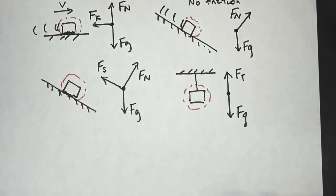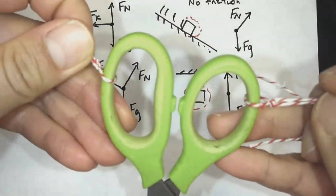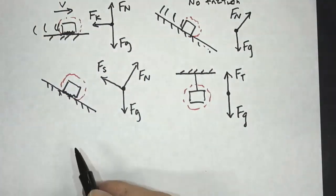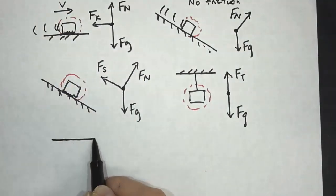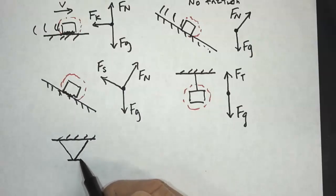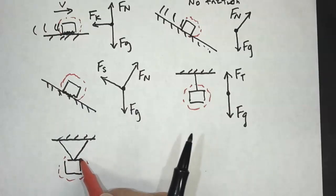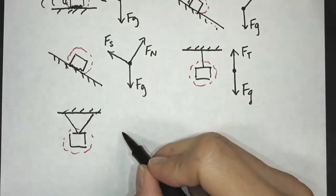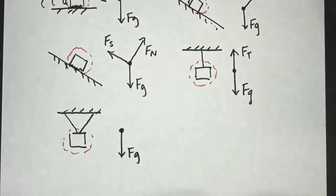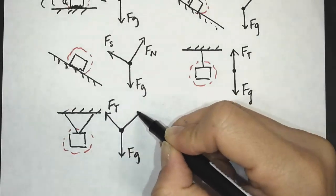Sometimes you can have two tension forces. For example, these scissors have two strings on them, and I can hold on to keep the scissors from falling. Here we have two strings and here's my object. Draw our system boundary, start with our dot, gravitational force, and we have two tension forces at different angles — Ft and Ft.